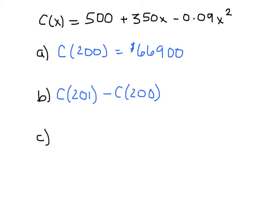As you know, we already calculated C(200). And of course, in my notes, I've calculated C(201). The cost for 201 widgets is $67,213.91 minus our previous calculation of $66,900. It gives us the cost for the 201st widget, which comes in at $313.91. Again, you can verify my values, but I'm pretty sure I'm right.